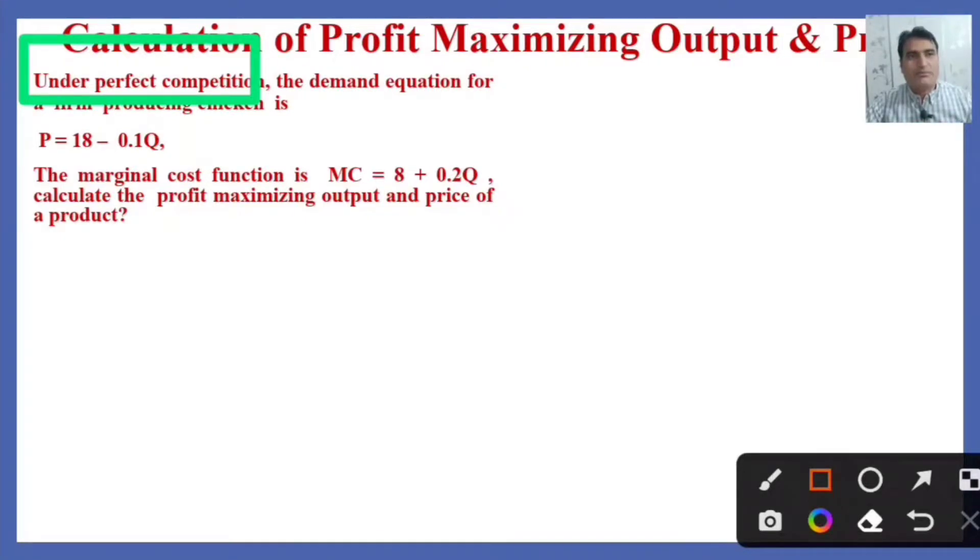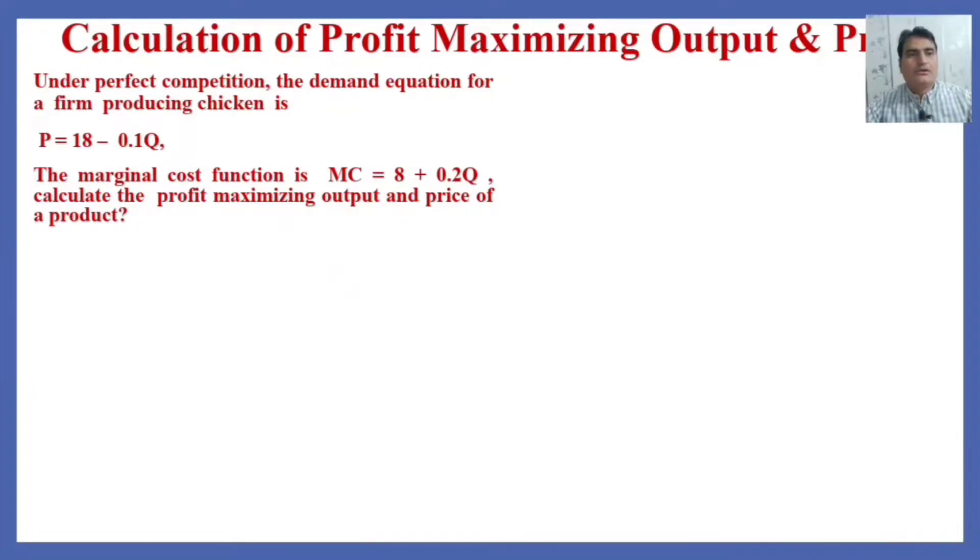If you want to learn how a firm under perfect competition achieves equilibrium, you can check out the link in the descriptions. As we know, the total revenue is equal to price times quantity. TR represents the total revenue, P represents the price, and Q represents the quantity.